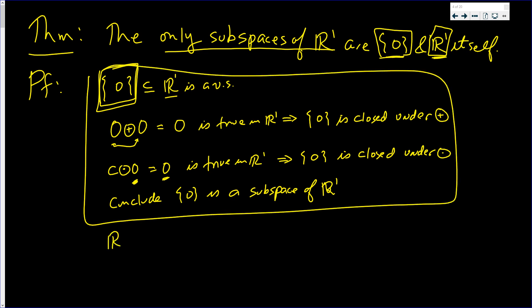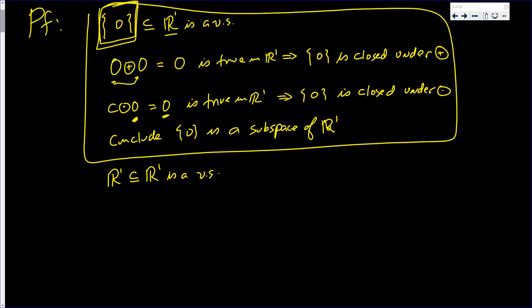Now let's show that R1 is a subspace of R1. Well, it's a subset of a vector space. So all I have to do is show that it's closed under plus and minus.